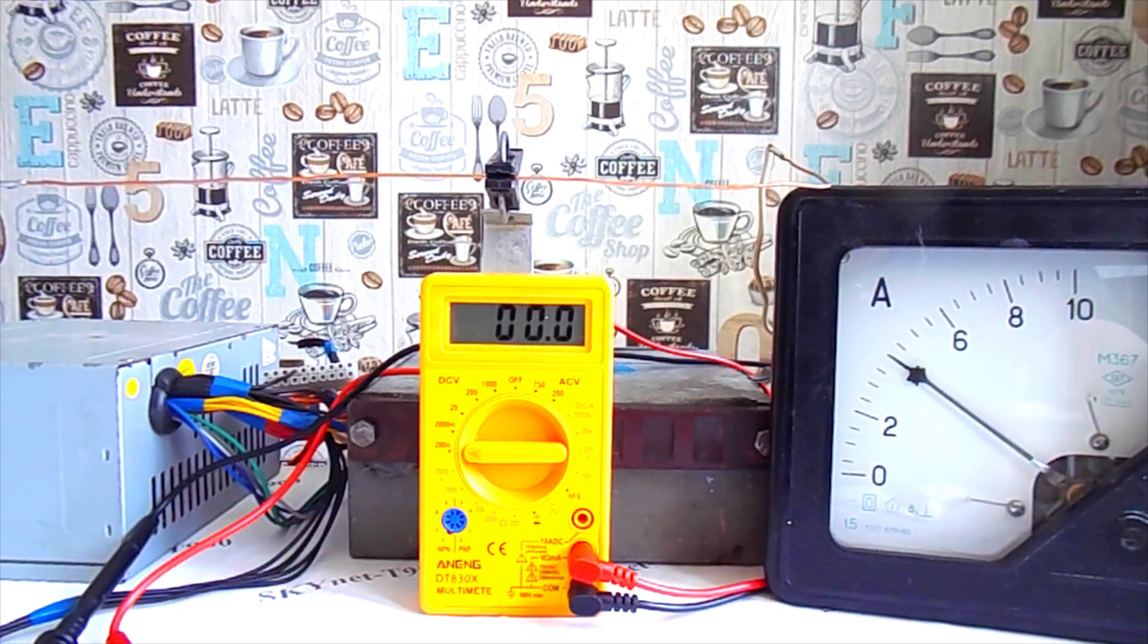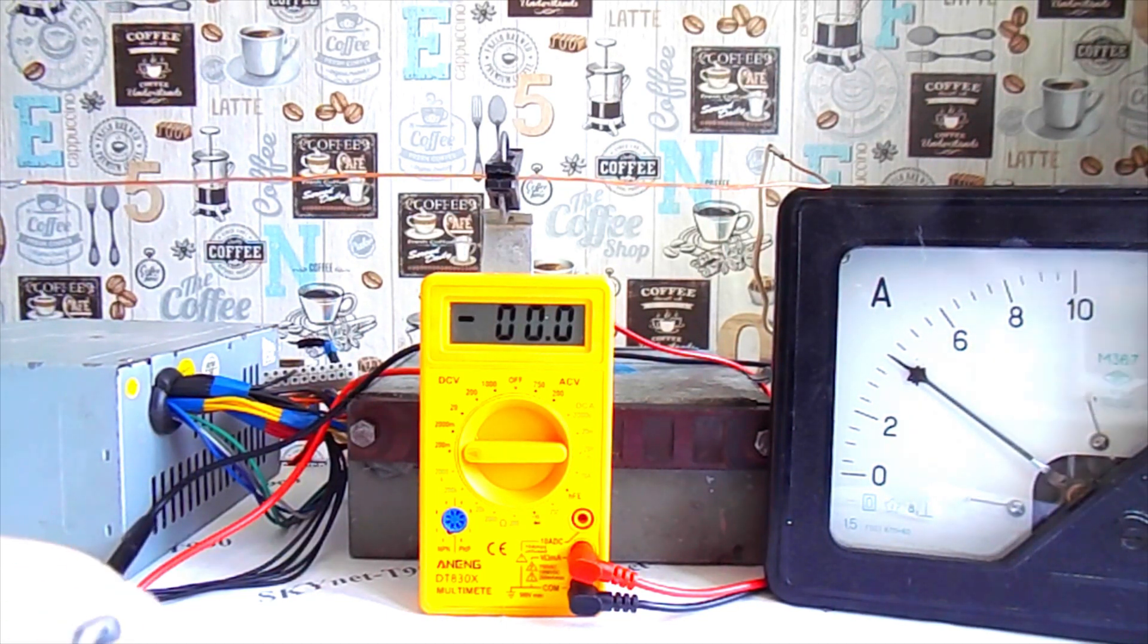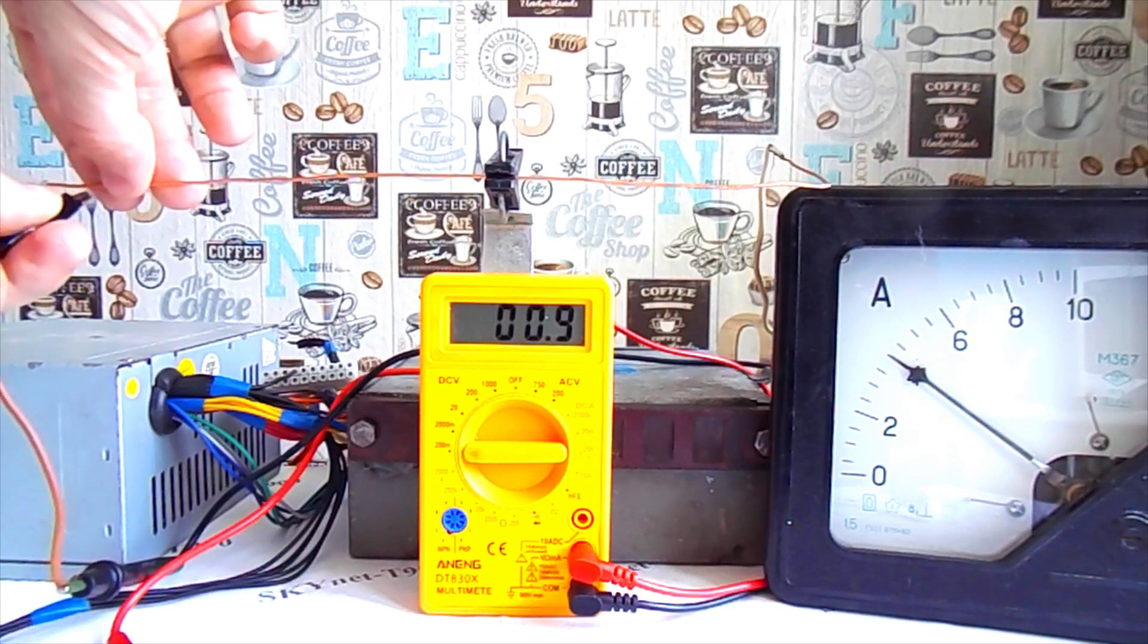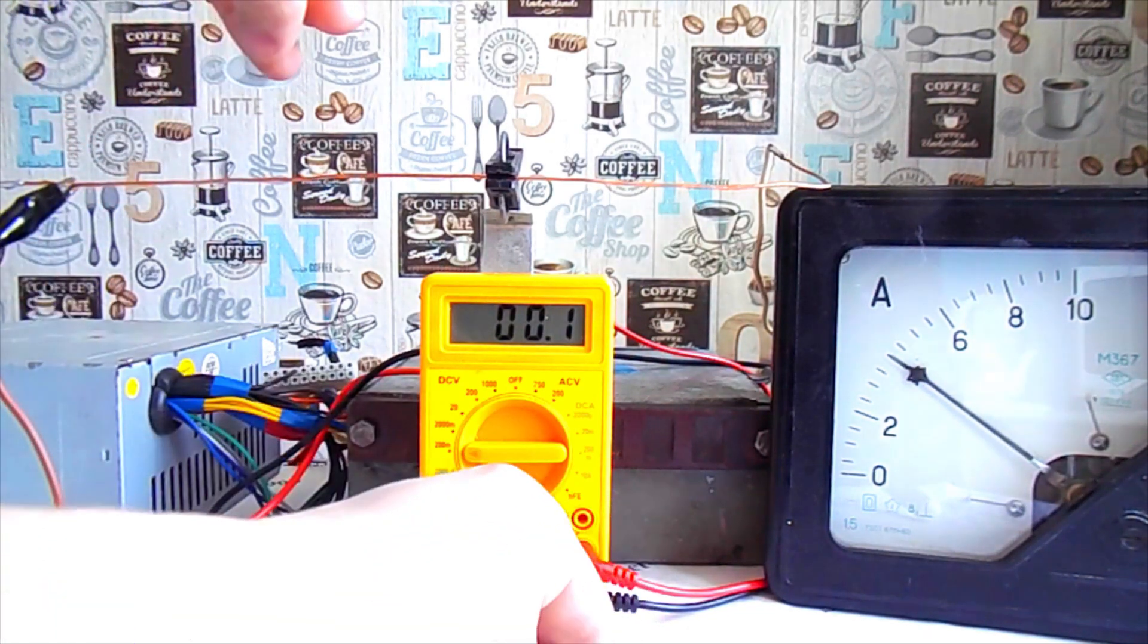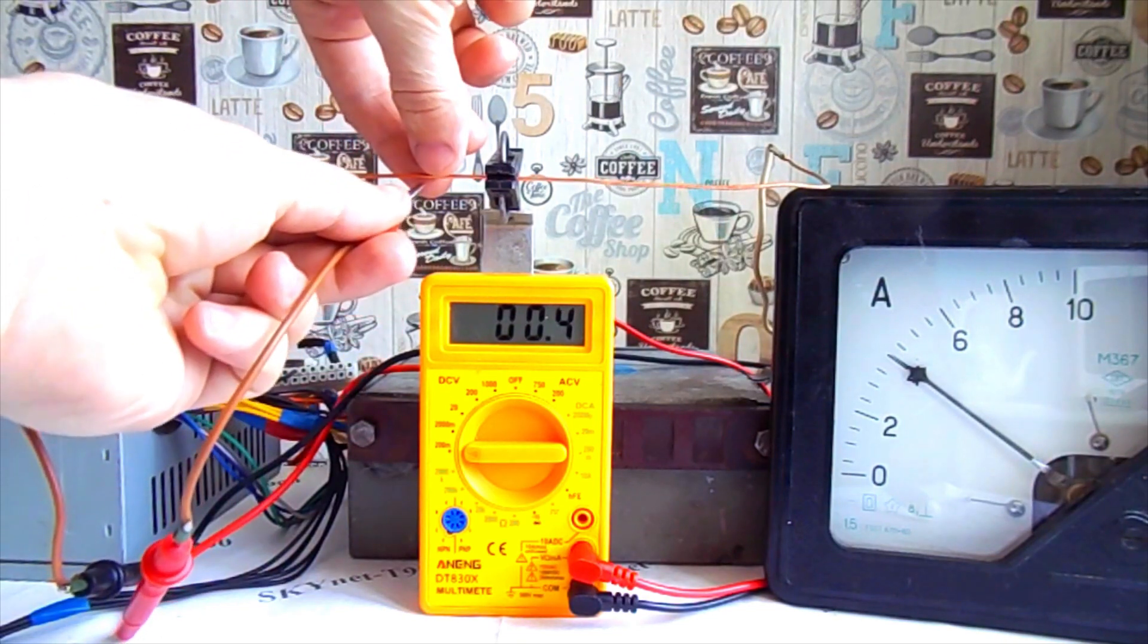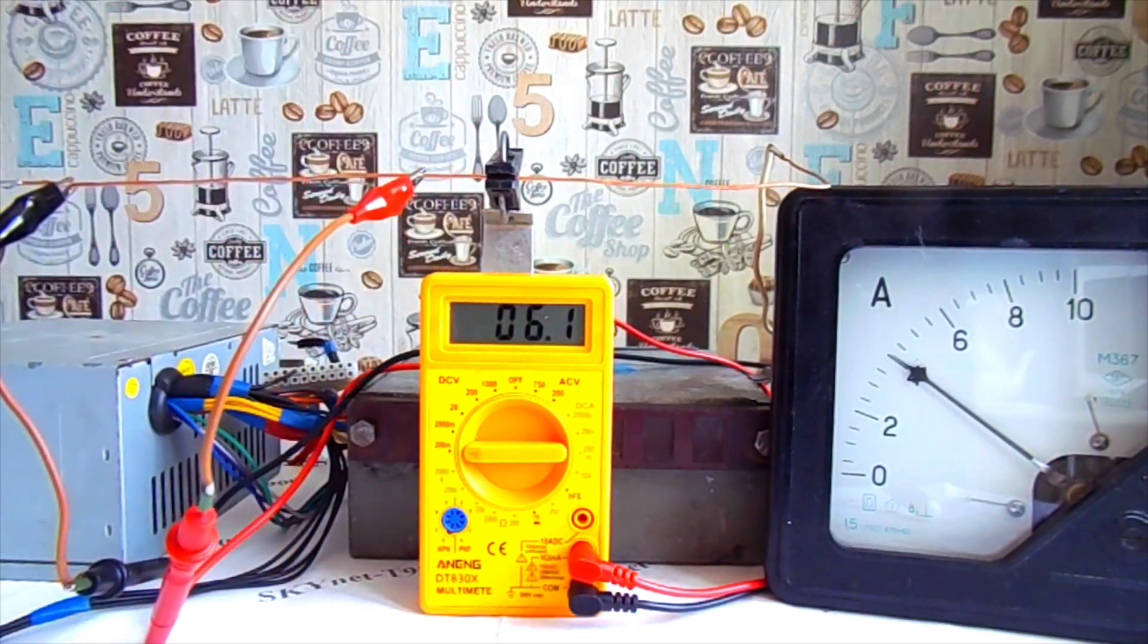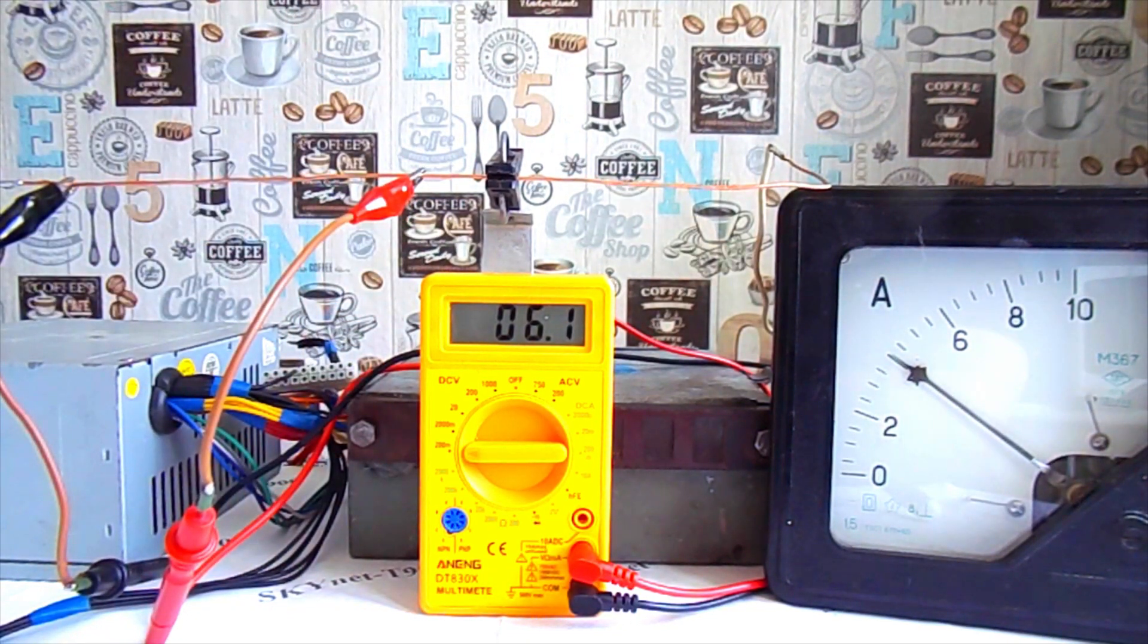First, I will make a current of 4 amperes. With the help of crocodiles, I hook the multimeter probes to the wire. The display shows the number 6. This means that a voltage of 6 millivolts drops on this piece of wire.